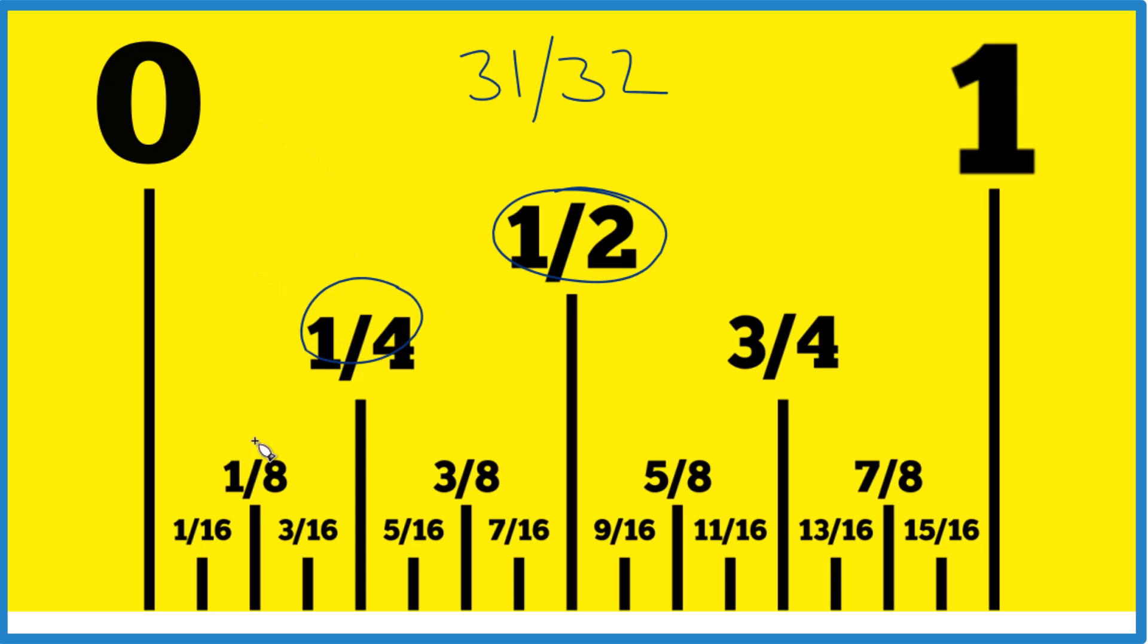Cut that in half, 1 fourth. 1 eighth. Cut 1 eighth in half, you get 1 sixteenth. And finally, when we cut 1 sixteenth in half, we're going to get 1 thirty-second.